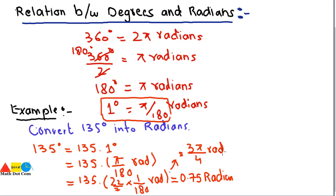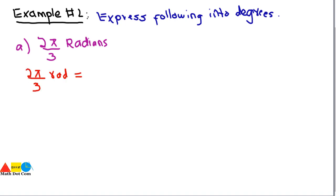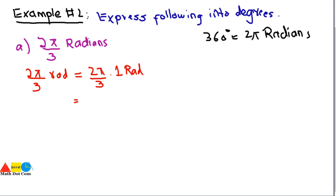Now let's have an example converting radians into degrees. Example 2: express 2π/3 radians in degrees. Using the relation 360 degrees equals 2π radians, we extract: 1 radian equals 360 degrees divided by 2π. This expression is used to replace 1 radian when converting to degrees.